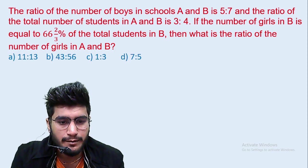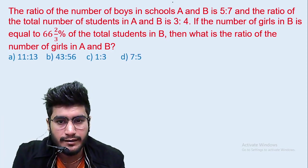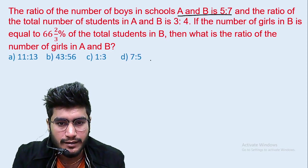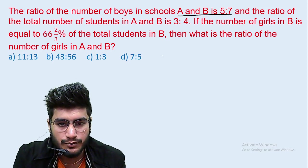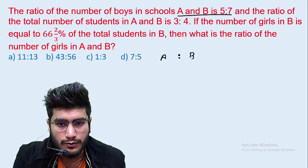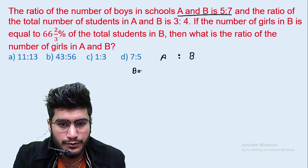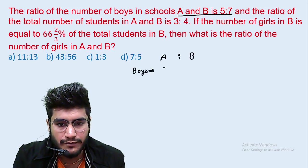The question is, the ratio of the number of boys in school A and school B is 5 ratio 7. Look, the number of boys ratio is given in school A and in school B. What is the ratio of boys? How much? 5 ratio 7.